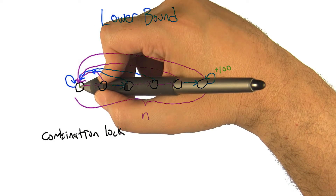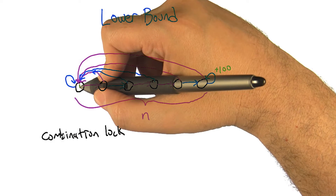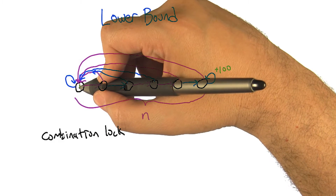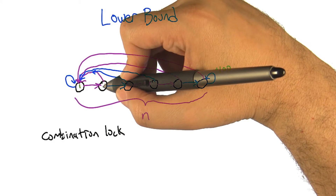If you guess wrong, you take the blue action and end up back in state one, at which point you'd say, okay, I know what that does, let me try the purple action. And now it advances us to the next state.